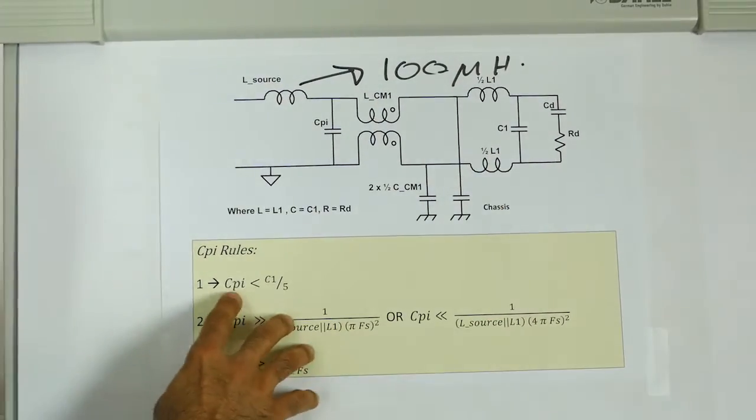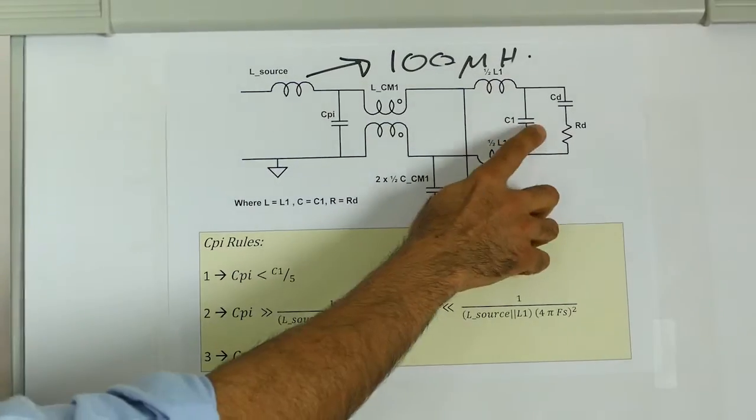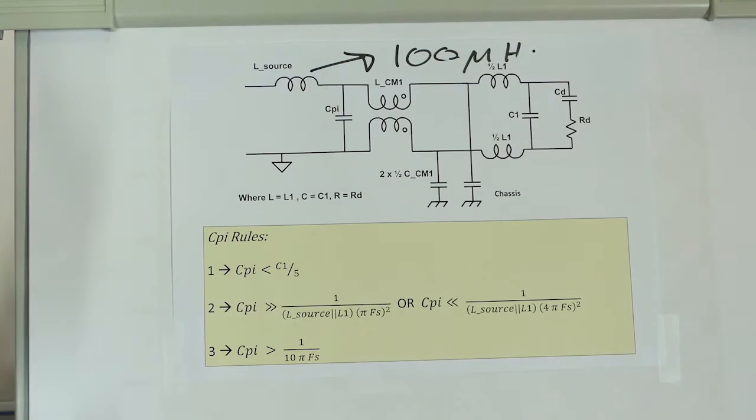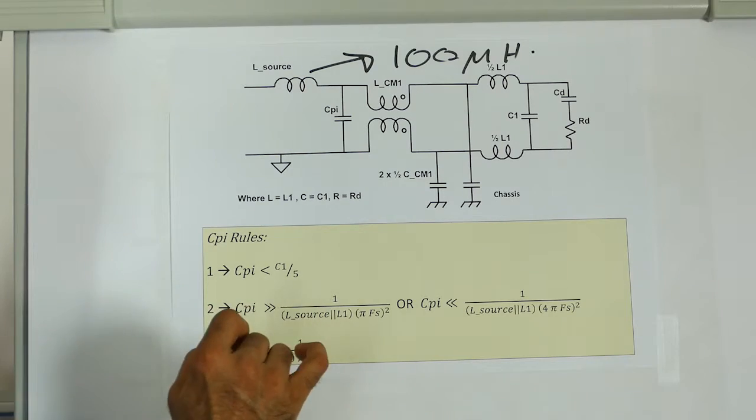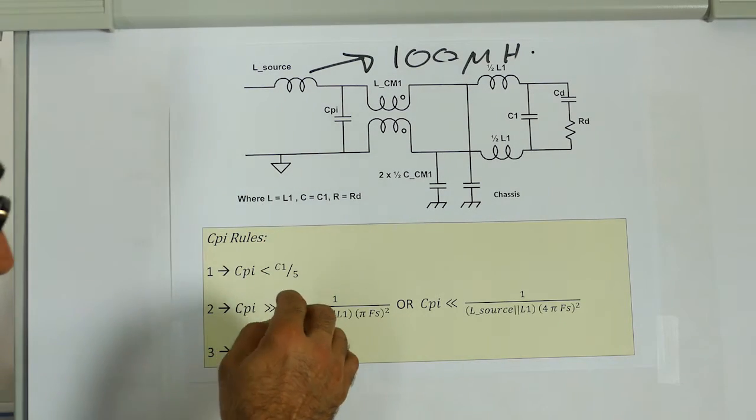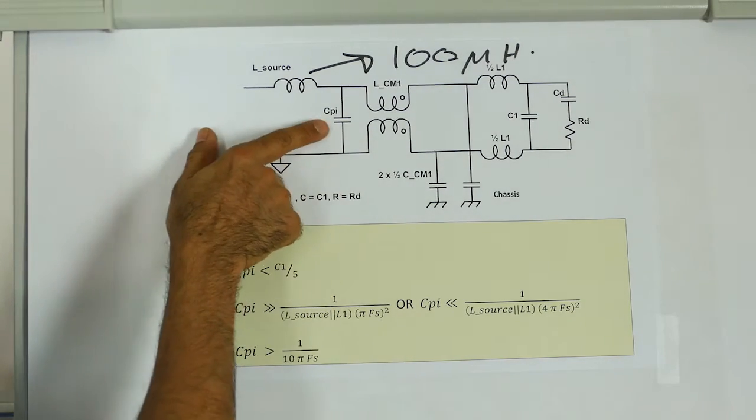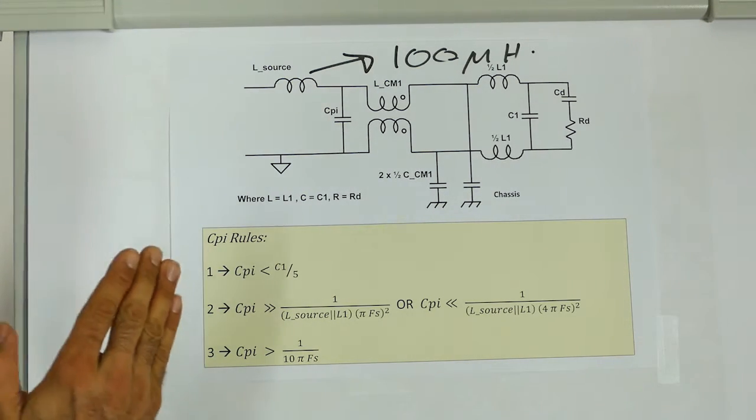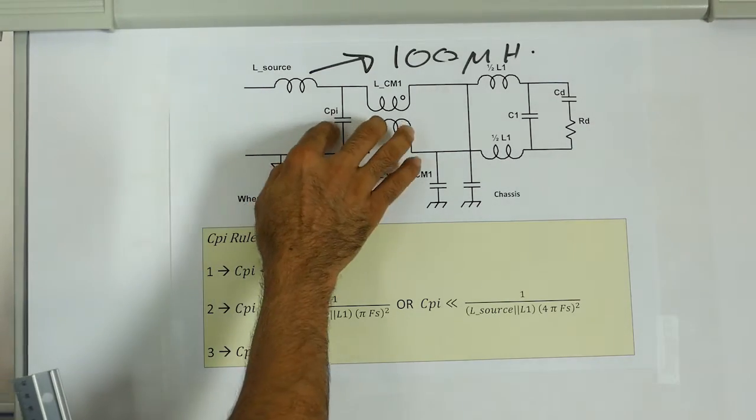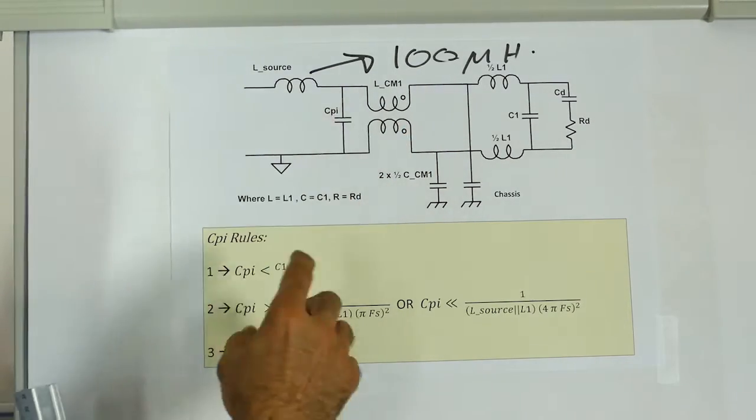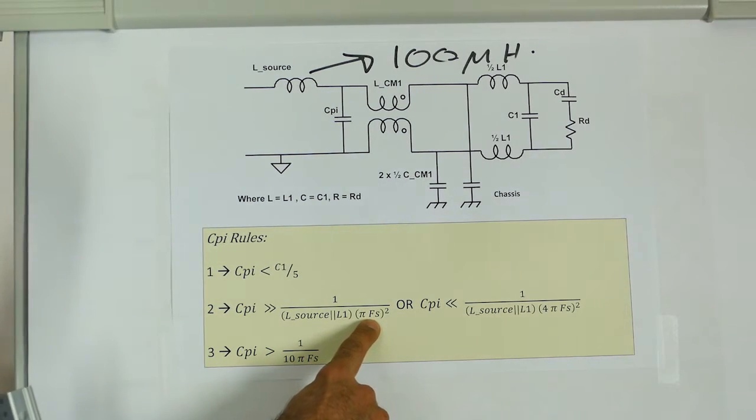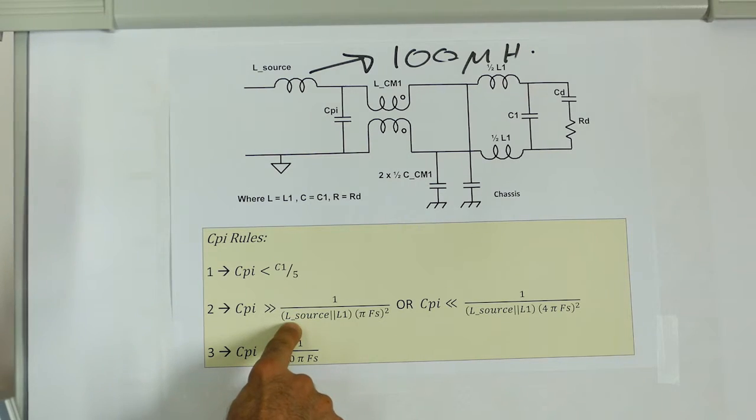Okay, so if you do not make this much smaller than that, then these two will interact and you do not get the cutoff frequency that you require. Secondly, the resonant frequency of the filter that is formed when you add Cpi is dependent on the switching frequency and you're trying to be away from the resonance of this circuit with regard to the switching frequency. You can see this from rule two whereby you take into account your switching frequency and you take into account the source inductance.